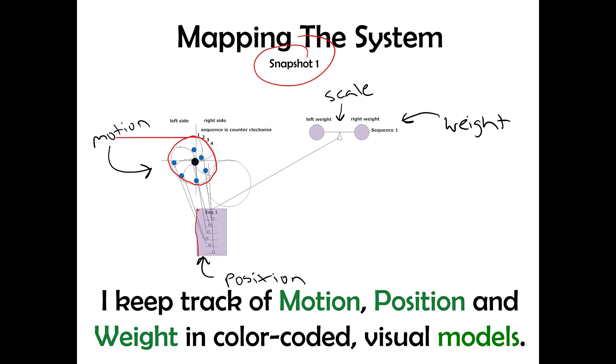This is the distance of each marble from the center y-axis to this axis here. This is the weight of the left side versus the right side by adding up the visual weight of the marbles.